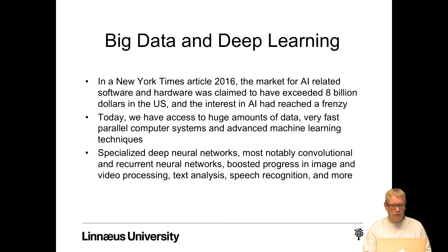Specialized deep neural networks — most notably convolutional and recurrent neural networks — have boosted progress in image and video processing, text analysis, speech recognition, and more. So right now we are in the middle of an AI boom.